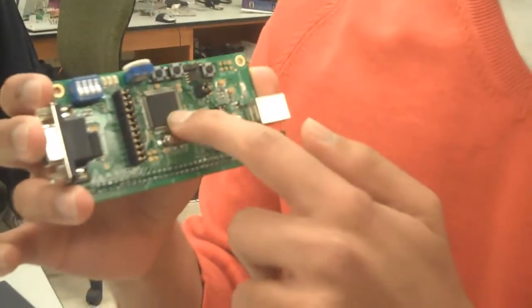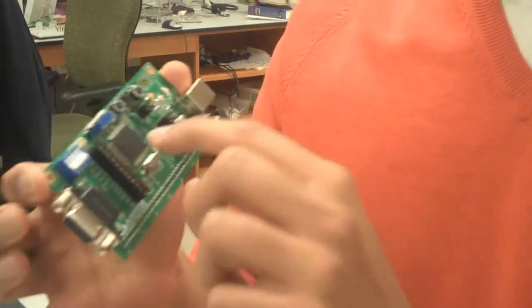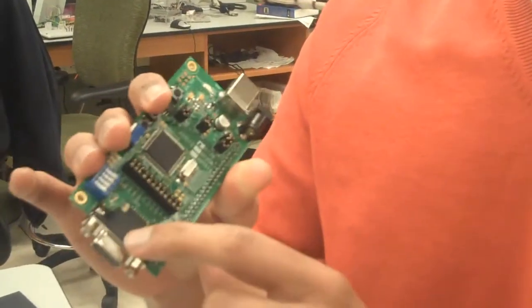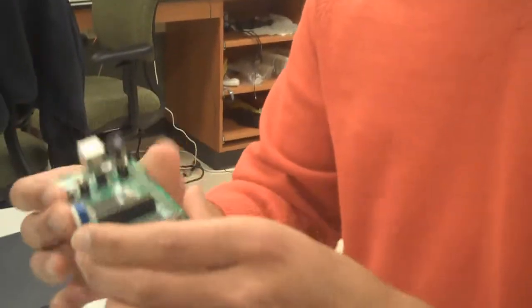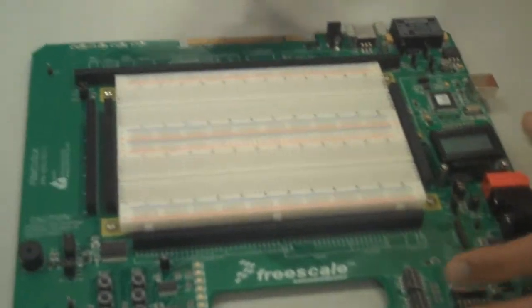The microcontroller unit is this integrated circuit over here. Connected to it is a serial port which you'll use to interface with the outside world. We can plug this device into the project board shown here.